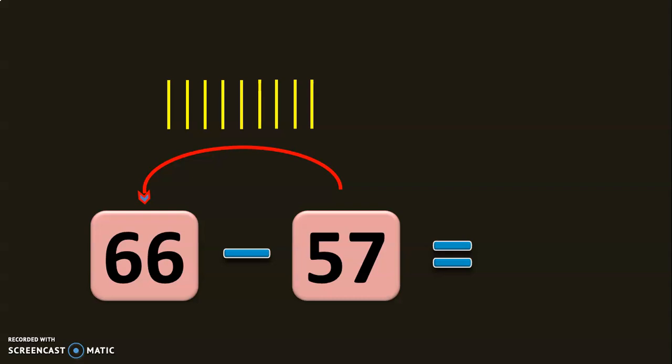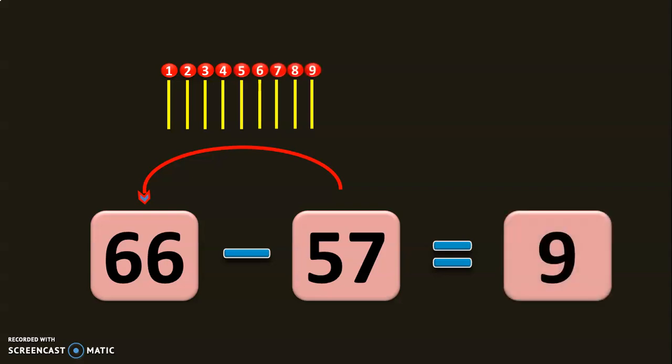How many numbers you need? 1, 2, 3, 4, 5, 6, 7, 8, 9. So you need 9 numbers to travel from 57 to 66. That is, the difference between 66 and 57 is 9.